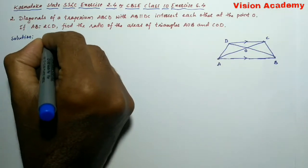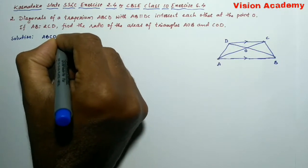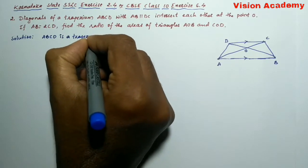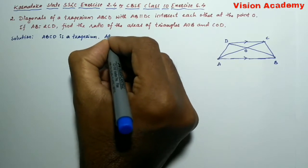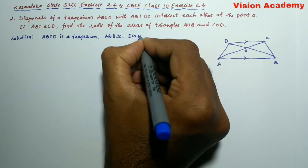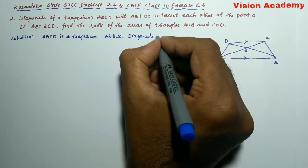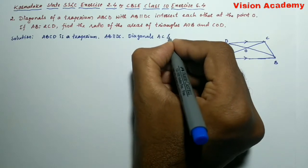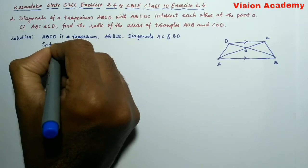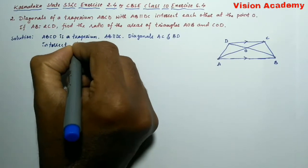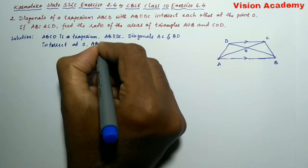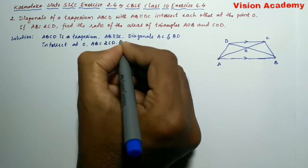Here, ABCD is a trapezium. AB is parallel to DC. Diagonals AC and BD intersect at O. Here, they have already given in the equation AB is equal to 2CD.